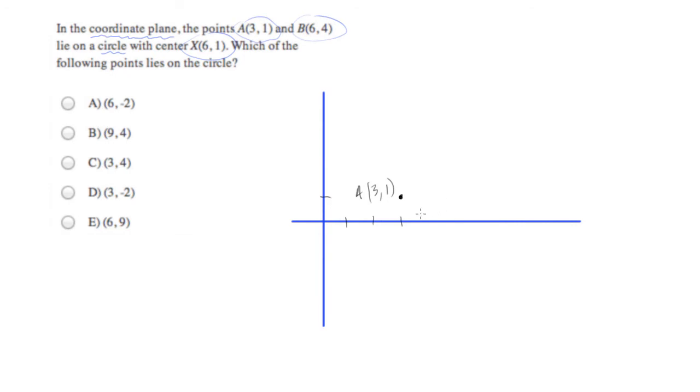Also, we want the point B, which is at 6, 4. So this is 4, 5, 6. And let's go up 4. 1, 2, 3, 4.